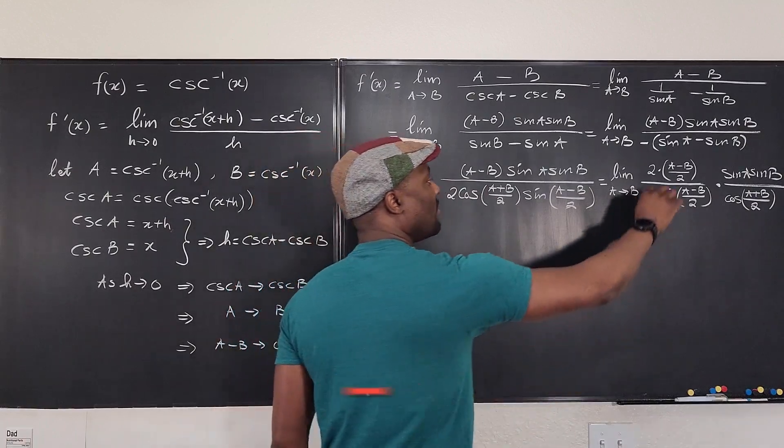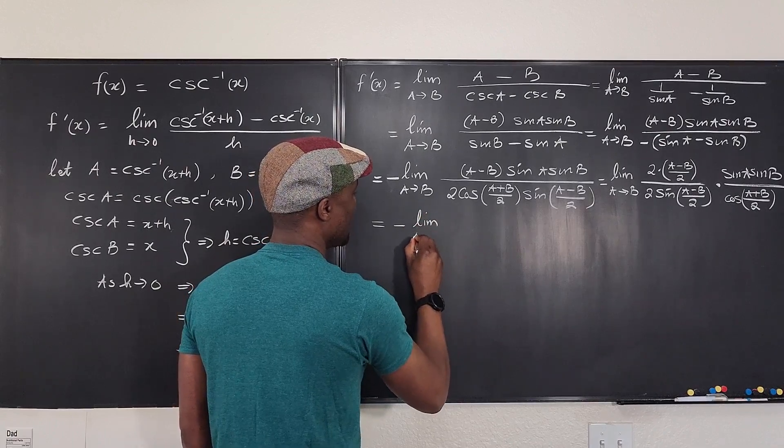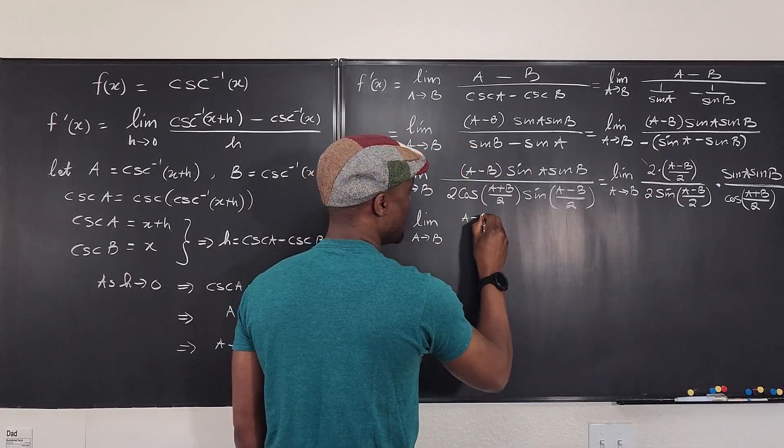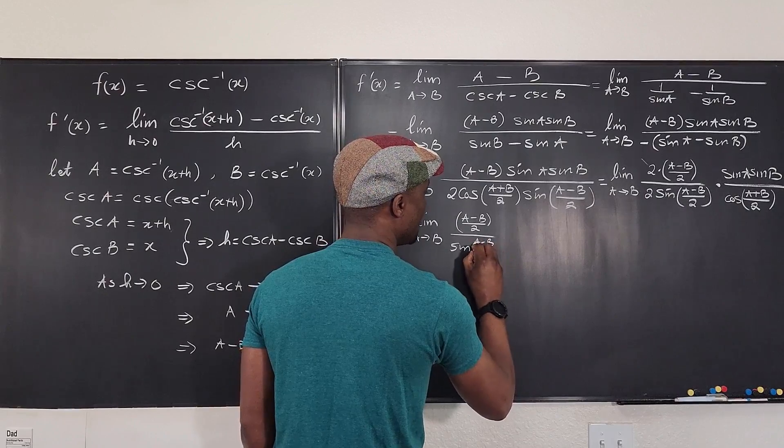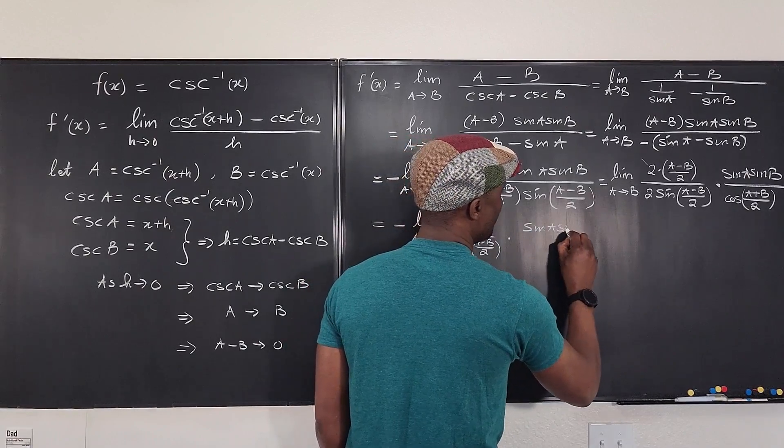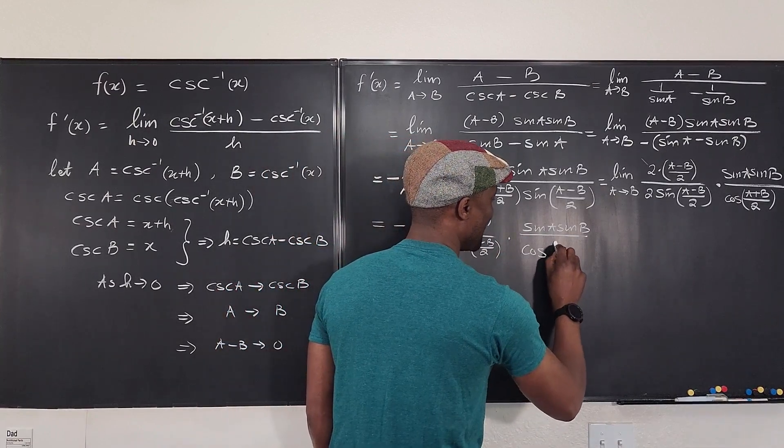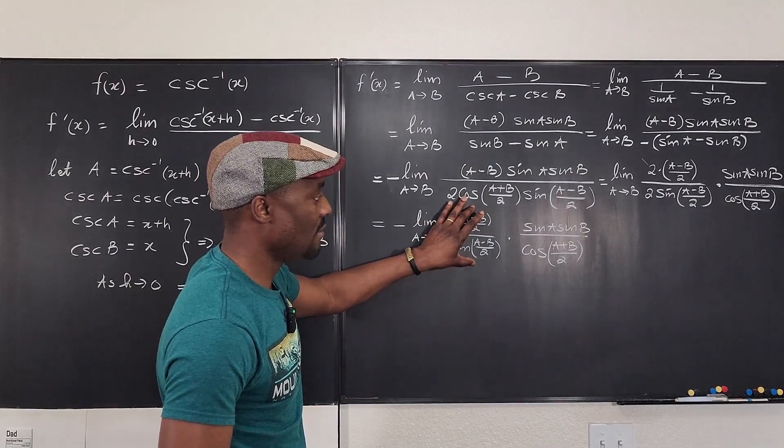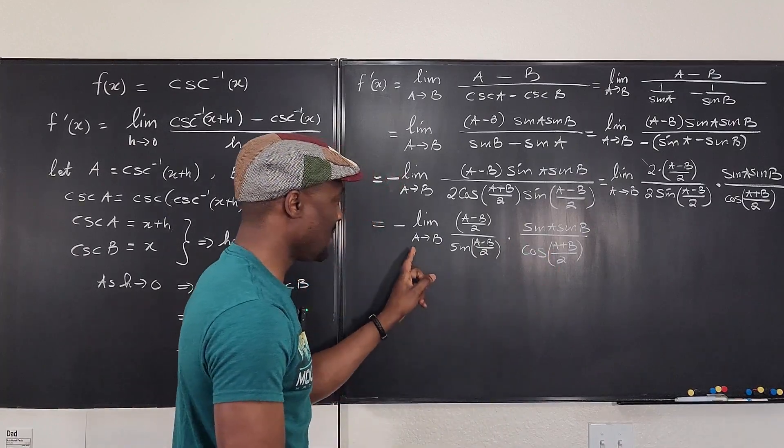Now I'm done. All of this can be cancelled out. So that what I have is minus the limit as a approaches b of, now if we cancel this out, what I have left is just a minus b over 2 divided by sine a minus b over 2 times sine a sine b divided by cosine a plus b over 2. This is just redundant because I didn't make any difference other than cancelling out the 2's. So what do we get? This goes to 1. This limit goes to 1.